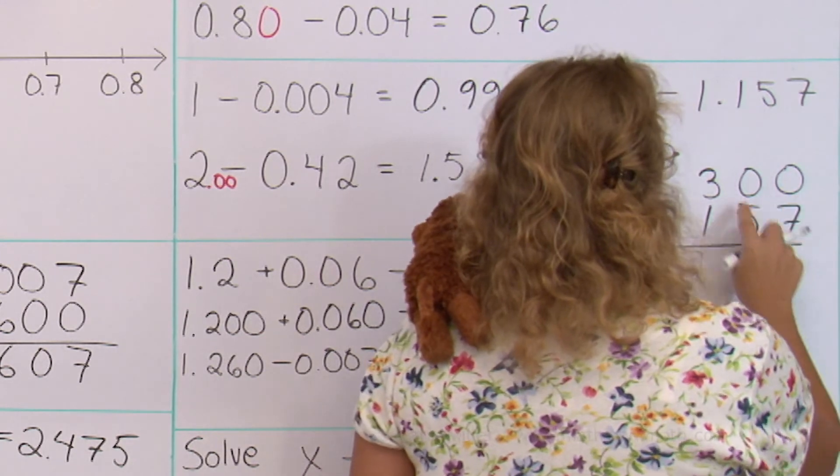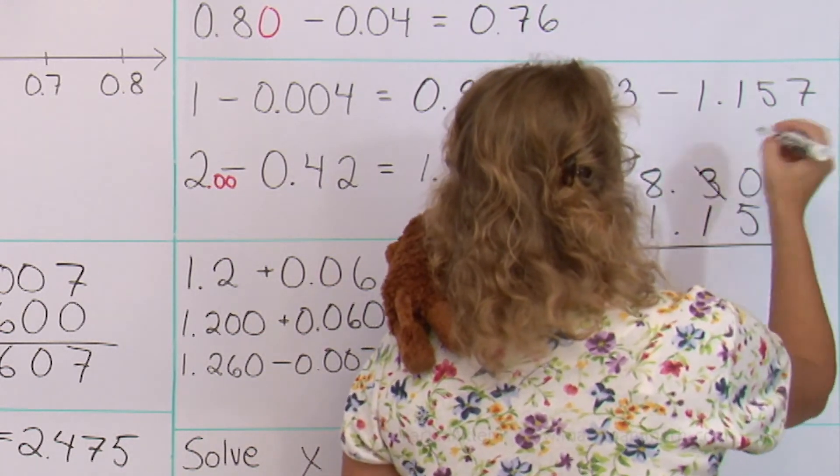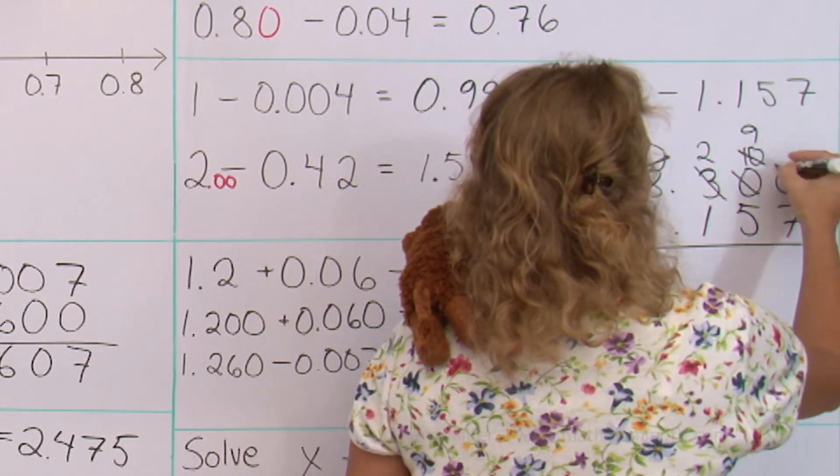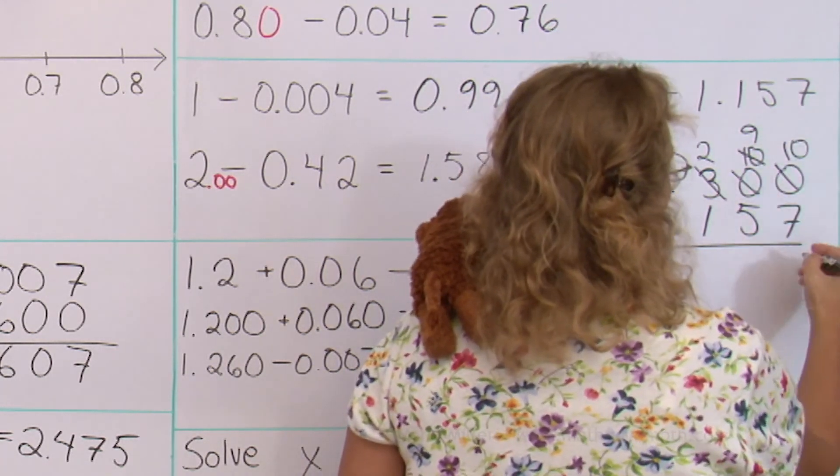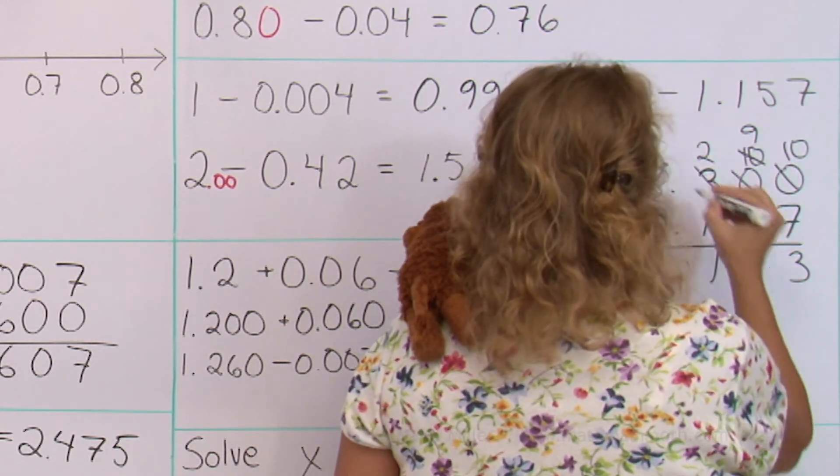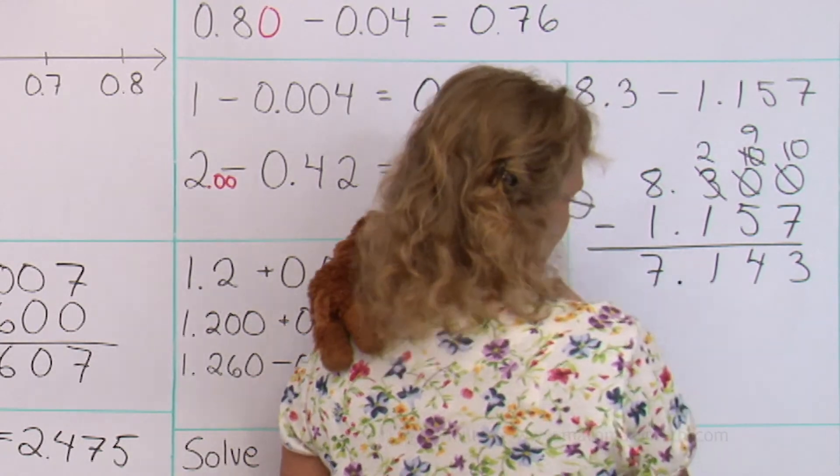Seems like we need to regroup. Okay, leave two here. And then second time. Ten minus seven here. Nine minus five. One and eight minus one. And then the decimal point right there.